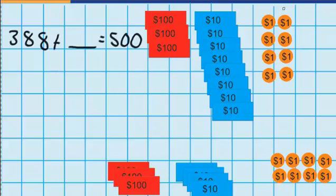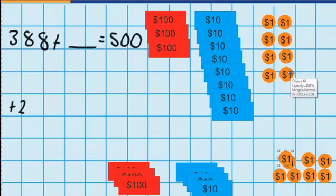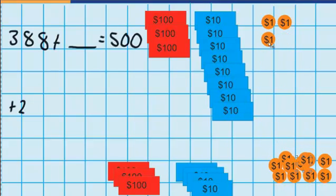The first question I ask myself is: if I have eight $1 coins, how many more $1 coins do I need to add? The answer is two. So I'm going to add those two $1 coins up there and record how much I've just added — that was $2. Now I've got ten $1 coins, so just like last time, I'm going to have to swap those ten $1 coins for one $10 note.